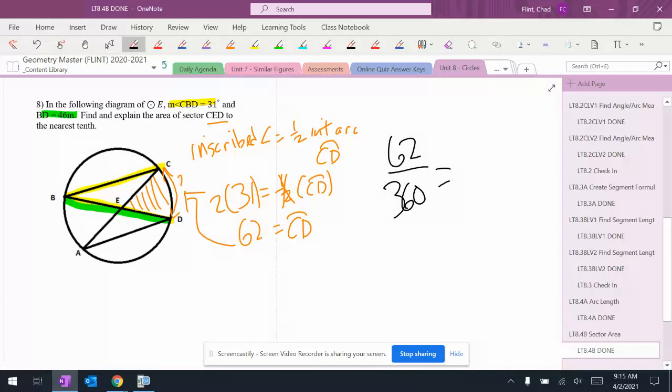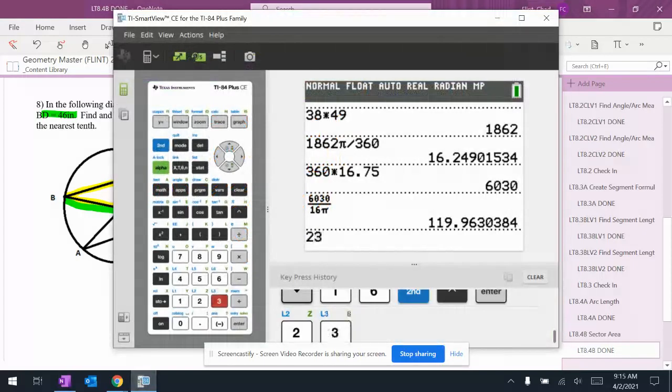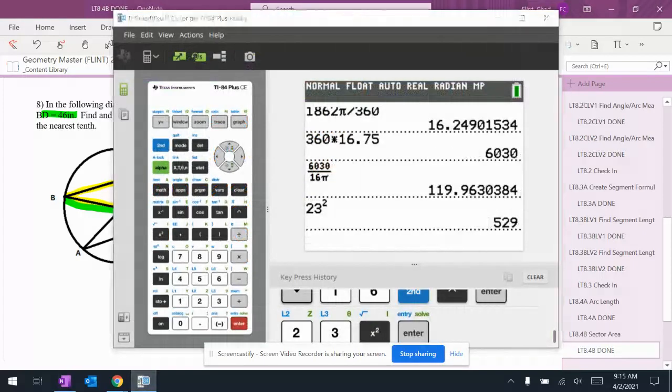Equals, you gotta do this the right way here, 62 over 360 equals I gotta find the area. So pi times the radius which is half of 46, 23 squared. 23 squared is 529.